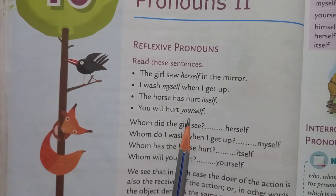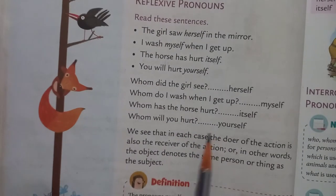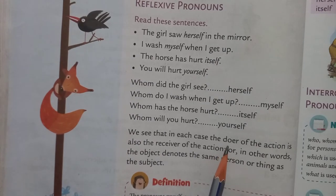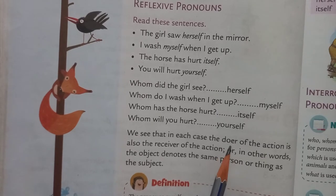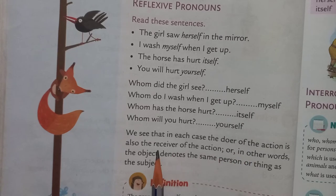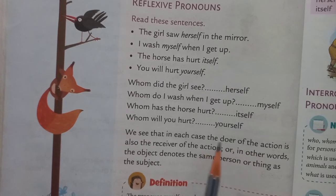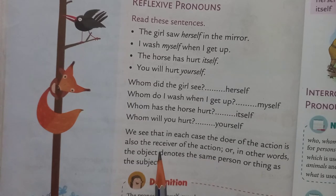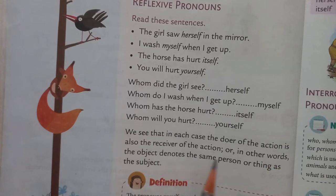Now, why are these called reflexive pronouns? We see that in each case, the doer of the action is also the receiver of the action. Doer means the person that does something. The object denotes the same person or thing as the subject.